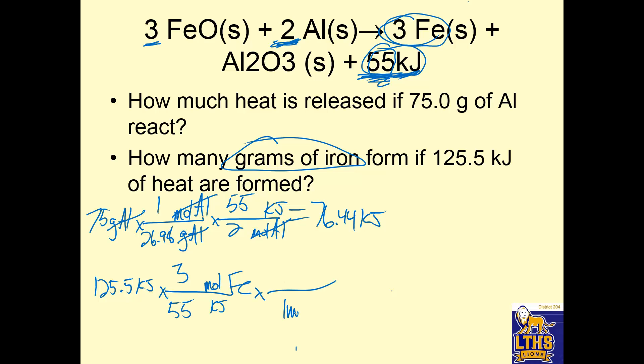And then I know that 1 mole of iron will be a certain number of grams of iron, and I get that by going to the periodic table to 2 decimal places. So 125.5 times 3 divided by 55 times 55.85 is 382.3 grams of iron. Easy peasy.